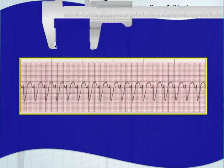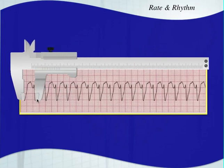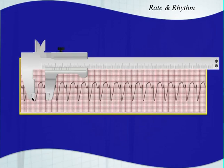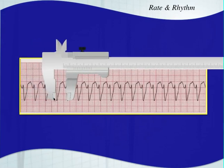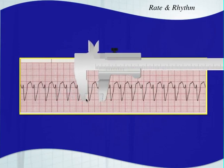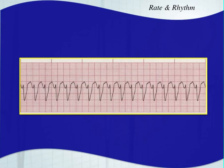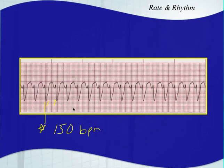With fast rhythms it's always important to identify regularity by measuring. This one looks pretty regular throughout. Since it's regular, we can use the 300 box method. This one's on a bold line — counting to the next QRS complex, we have about two boxes. So 300 divided by two is 150 beats per minute — roughly 150, maybe even a little bit faster.